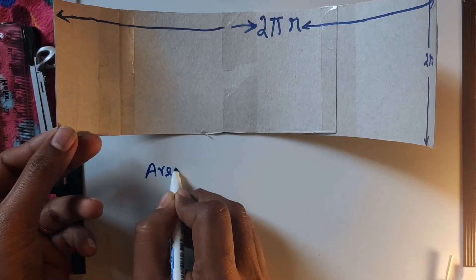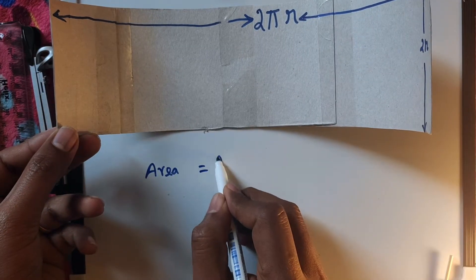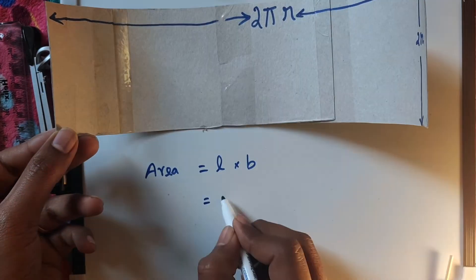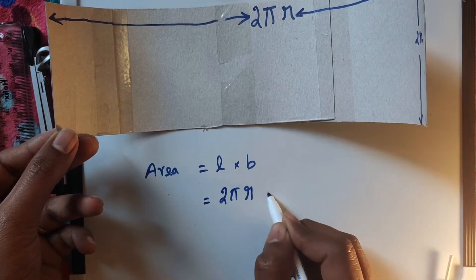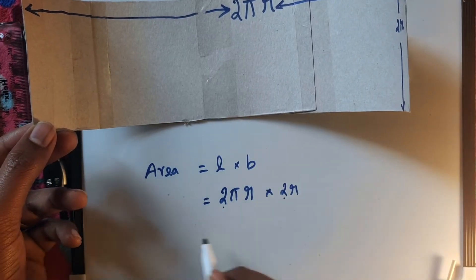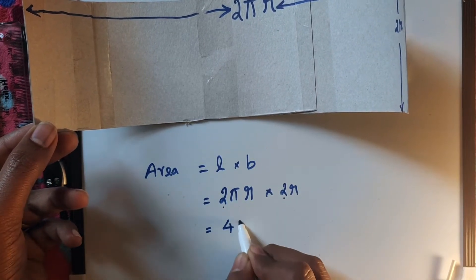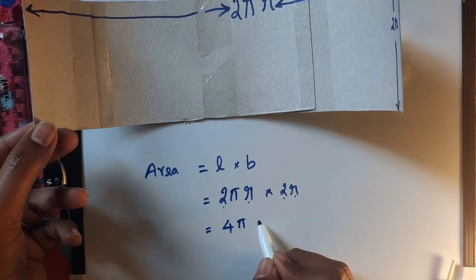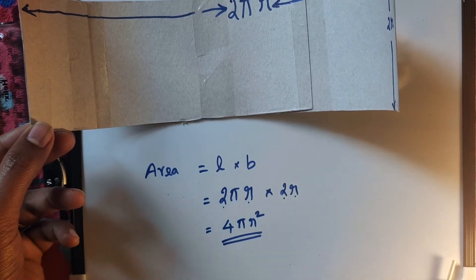Now to find the area of the rectangle, that is length L into breadth B. Our L is 2πR and breadth is 2 times the radius 2R. So 2 into 2 equals 4πR into R, which is R squared. That's it - 4πR².